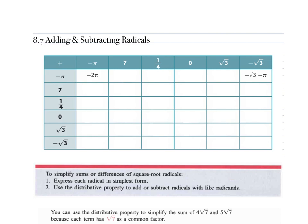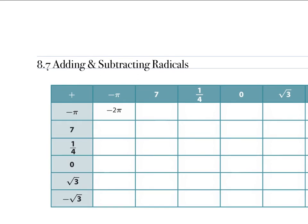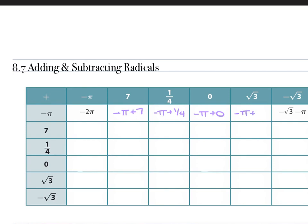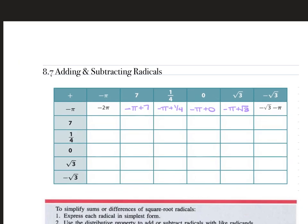Looking at this table, we're dealing with rational and irrational numbers. Taking negative pi and adding it to 7 gives negative pi plus 7. Negative pi plus one-fourth is negative pi plus one-fourth. Negative pi plus 0, negative pi plus the square root of 3, and negative square root of 3 plus negative pi, which is the same as negative square root of 3 minus pi.